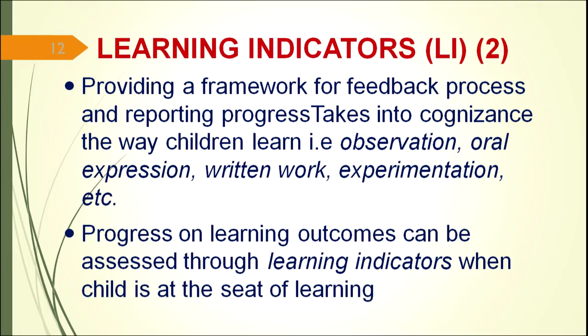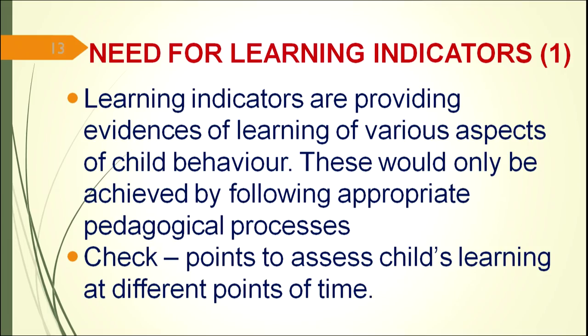Learning indicators take into account the various processes children follow in learning — like observation, expression, writing work, and experimentation. Progress on learning outcomes can be assessed through learning indicators when a child is in the seat of learning. Learning indicators provide evidence of learning, which is beneficial for reporting the child's progress in terms of learning outcomes. They are checkpoints to assess child learning at different points in time — not at a specific period, but across different points.